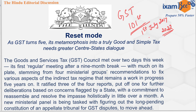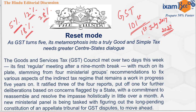GST is one indirect tax for the whole nation. Direct taxes — such as income tax and corporation tax — are paid directly to the government. Indirect taxes, like GST, are paid when we buy goods or services. GST has four slabs: 5%, 12%, 18%, and 28%. Some goods have 0% GST, and different goods fall under different slabs.